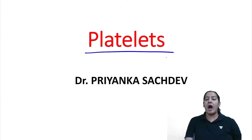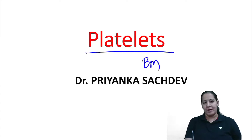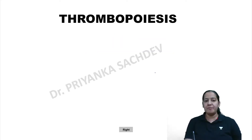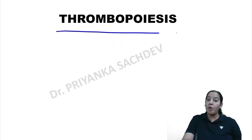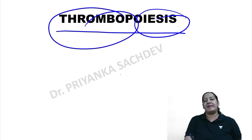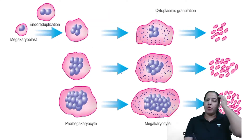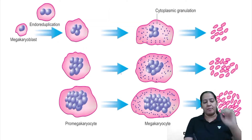You must understand how platelets are formed. Like all other blood cells — RBC and WBC — platelets are formed in bone marrow. The formation of platelets in the bone marrow is known as thrombopoiesis. Poiesis means formation, thrombo means platelets — thrombopoiesis. This is how platelets are formed in the bone marrow.